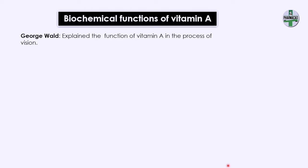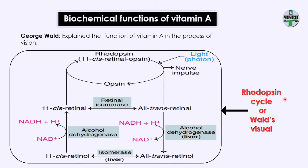George Wald explained how vitamin A is useful for the process of vision. There is a cycle called the rhodopsin cycle or Wald's visual cycle. In the human eye there are rods and cones — rods are useful for dim light and cones for vision in bright light. Rhodopsin is a conjugated protein present in rods, also called 11-cis retinal-opsin. There is isomerization of 11-cis retinal to all-trans retinal, which is responsible for the nerve impulse and a conformational change in opsin.